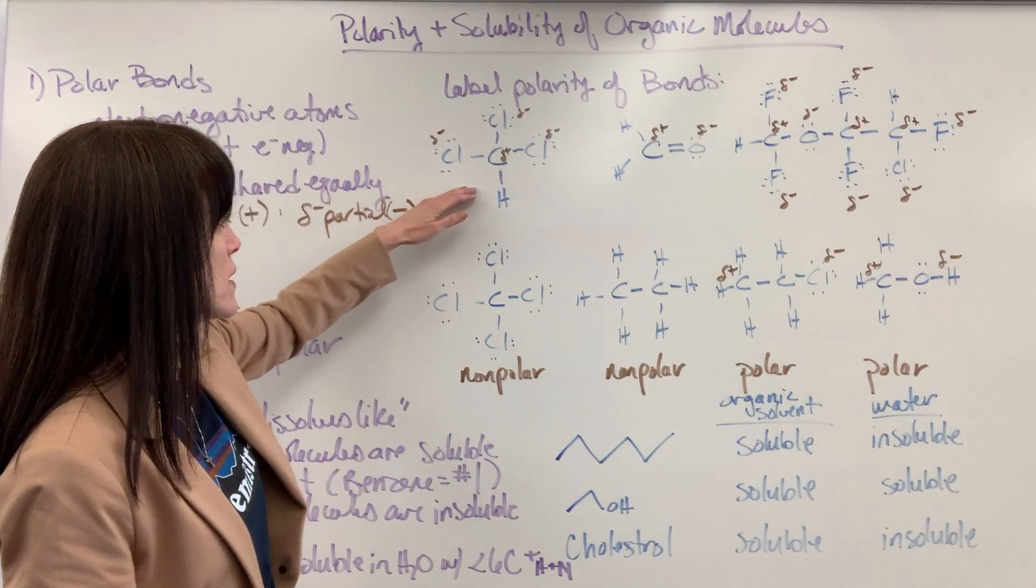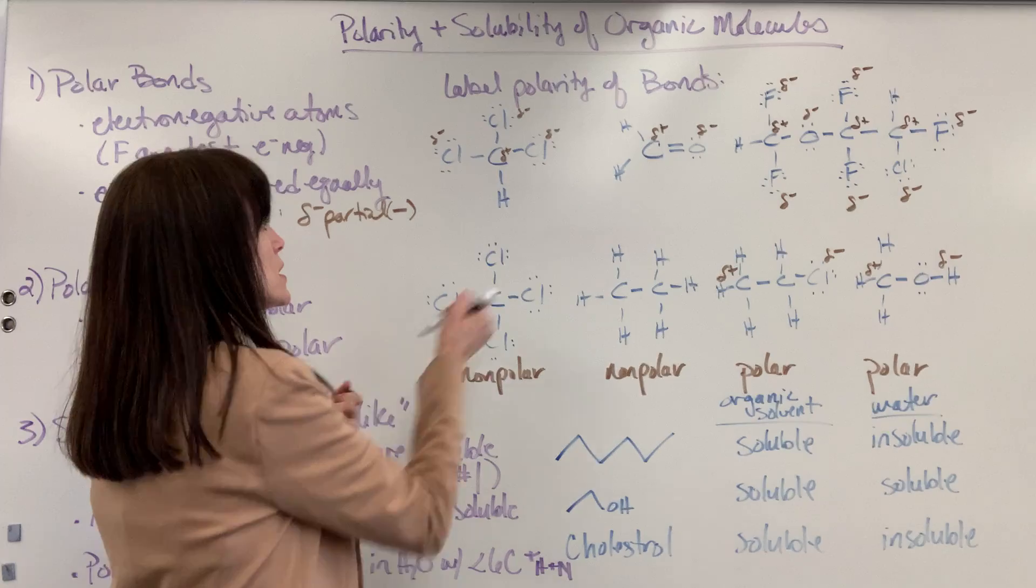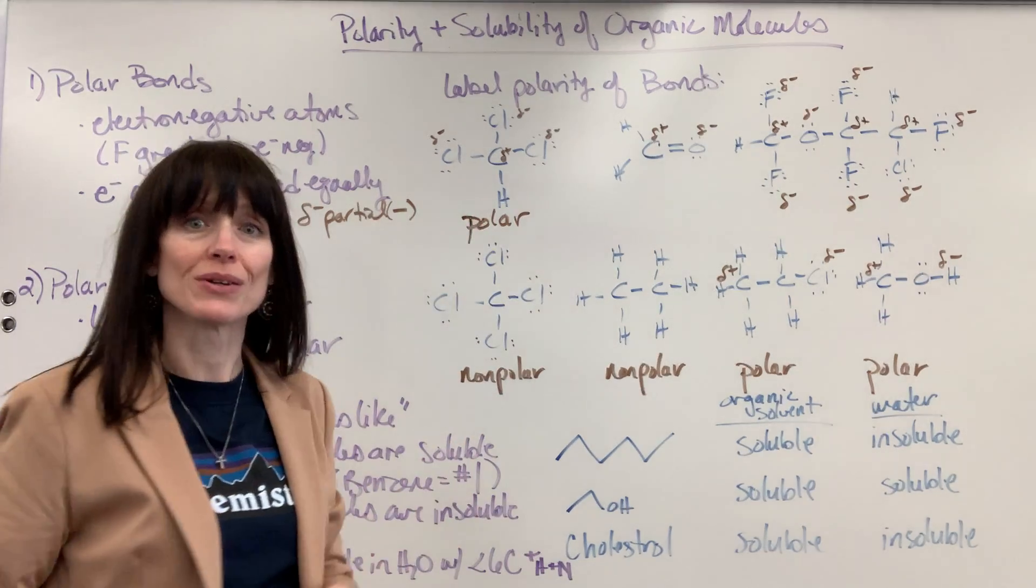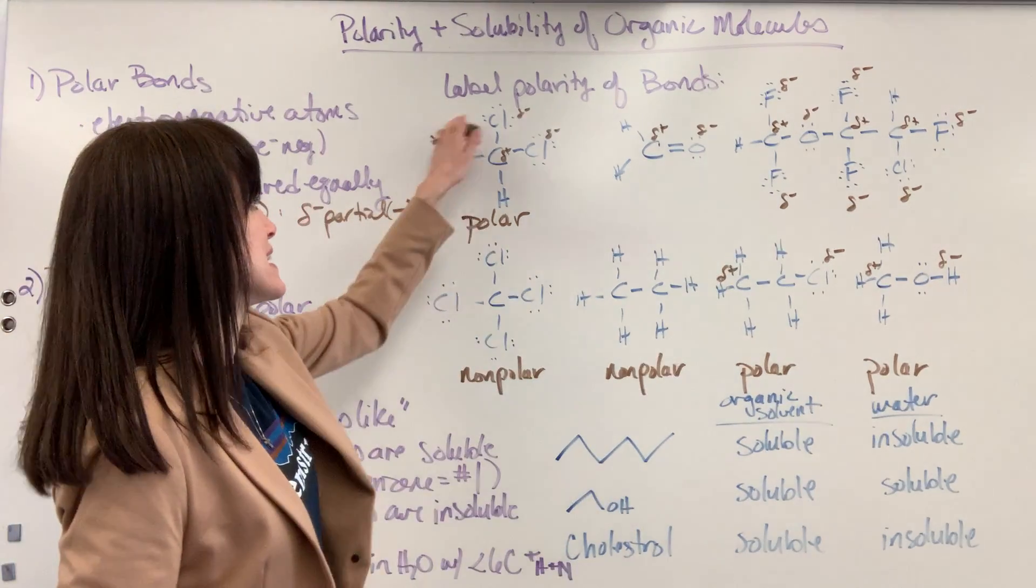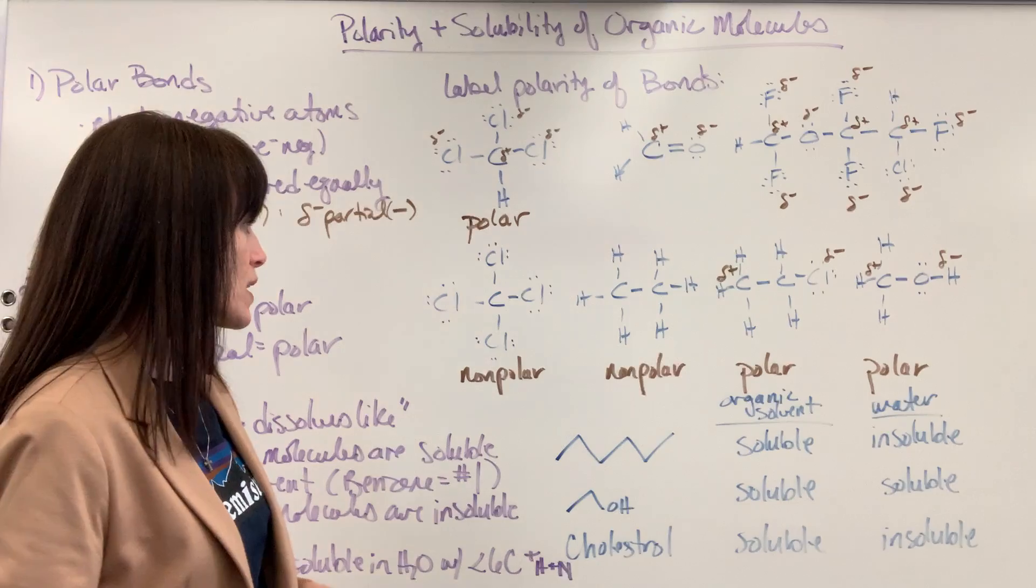Contrast it with this one up here. I have three chlorines, one hydrogen. This one would be polar. That's a polar molecule because it's asymmetrical. It has different substituents around that central atom, the carbon.